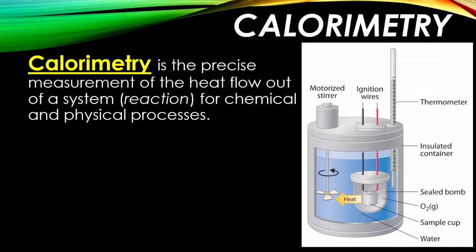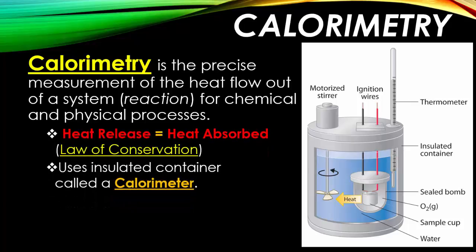Calorimetry is the actual measurement that chemists will use to figure out the heat of a reaction for a chemical or physical process. A calorimeter is going to be using a container that contains a sample that's sealed in a chamber of oxygen. That chamber is then immersed in a fluid like water, where it is then analyzed via a thermometer for the changes in heat. The law of conservation of heat states that the amount of heat that any sample releases has to be equivalent to the amount of heat absorbed by another system.